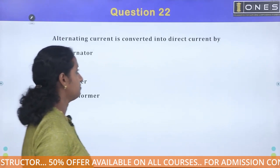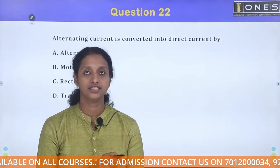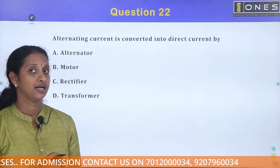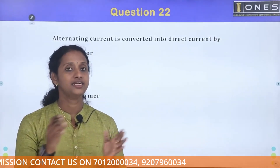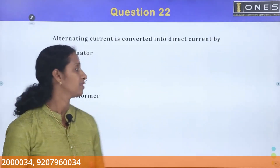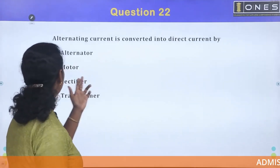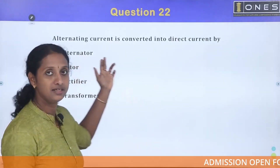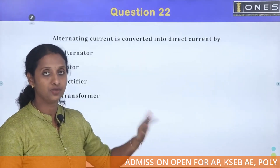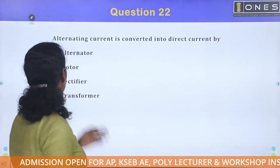Alternating current is converted into direct current. AC to DC — we use rectifiers. For AC to AC, we use alternators. Mechanical energy is converted to AC three phases.